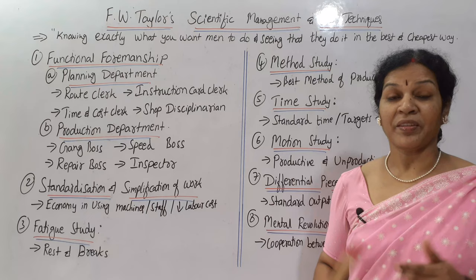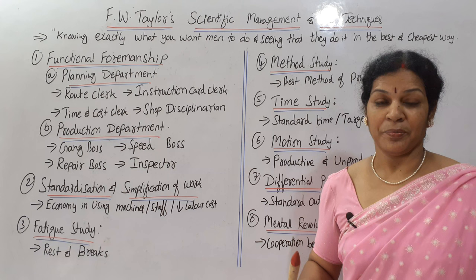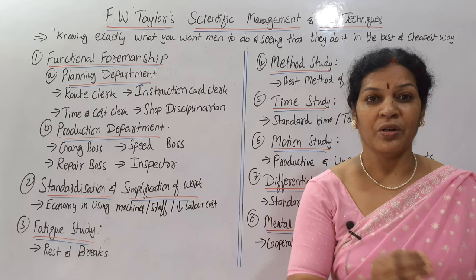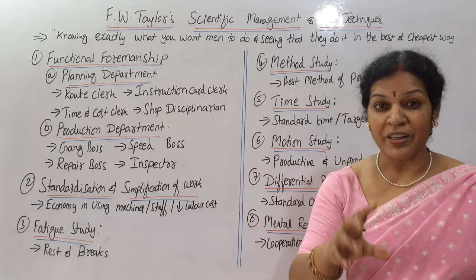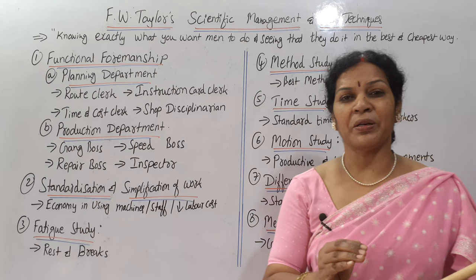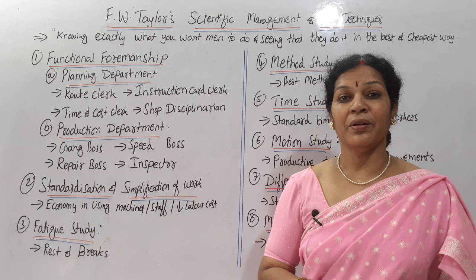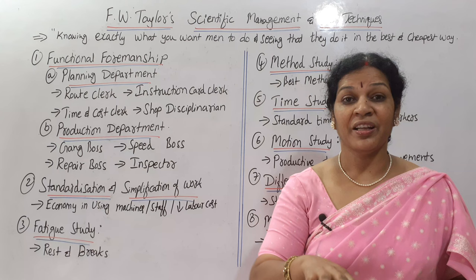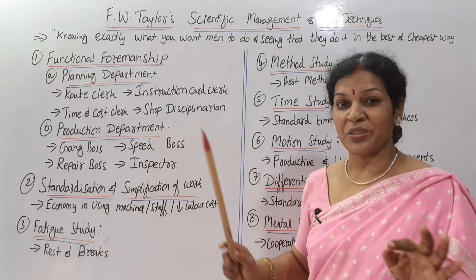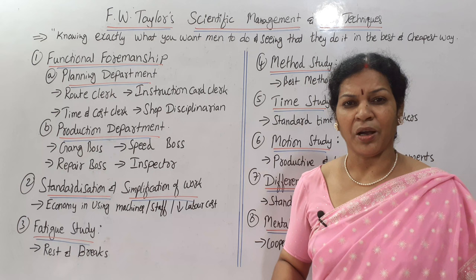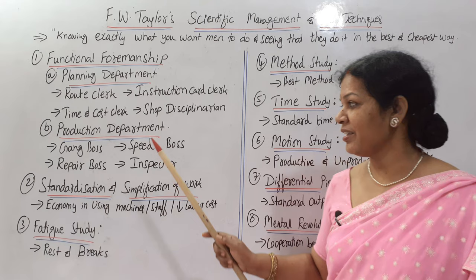The next foreman is the speed boss. The speed boss's job is to see the speed of production — whether the production speed is going slow or needs to be increased. If workers are working properly then speed is okay; if people are lazy, going on leave, working slowly, or the methodology and techniques are slow, that affects the production speed. The speed boss takes care of speed: if speed is low, how to increase it, what technology and techniques to use, upgrading skills — that is the duty of the speed boss.